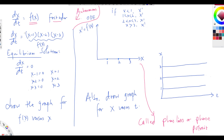To find the equilibrium points, set dx/dt = 0: (x-1)(x-2)(x-3) = 0, giving x = 1, x = 2, and x = 3. These are the equilibrium solutions — the rate of change is zero there, meaning the derivative is zero and x is constant. For any t, if x starts at 1 it stays at 1.